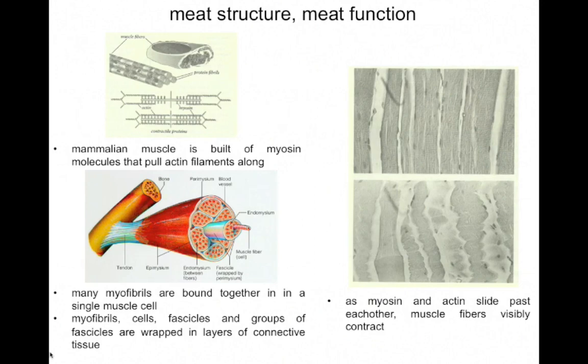Let's begin our discussion of meat with a look at the structure of meat at the molecular and cellular level. Meat, of course, is usually referring to the skeletal muscle of mammals. Although we'll also wind up talking a little bit about fish today, and we'll leave crustaceans and shellfish aside completely, although we generally consider their flesh to be meat as well. Here at the upper left we have a diagram of some molecular structures of meat for beef.